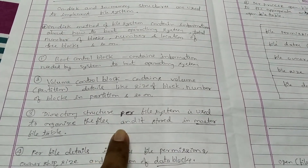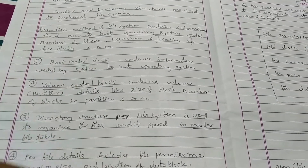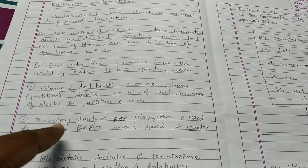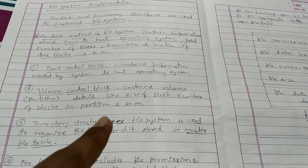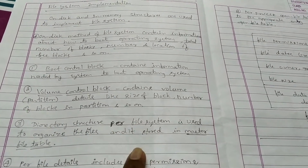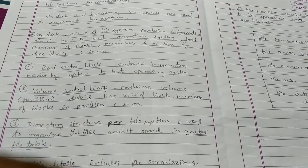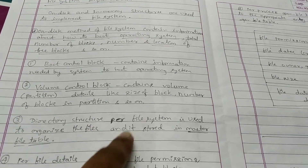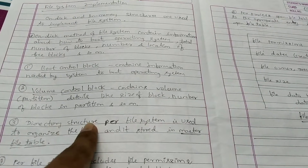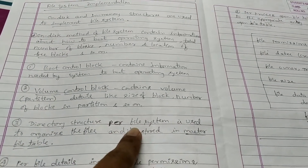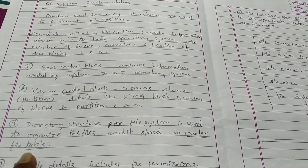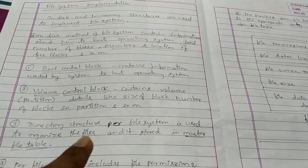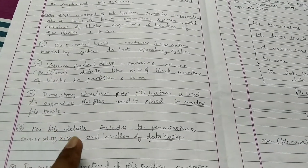Next is the directory structure per file system. This is majorly used for identifying what type of directory structure we follow in our secondary storage. We have seen four or five directory structures — single level, two level, tree structured, acyclic — and which one we are going to prefer is stored in the directory structure file system. It is called the master file table, and that file table holds information about the directory structure.